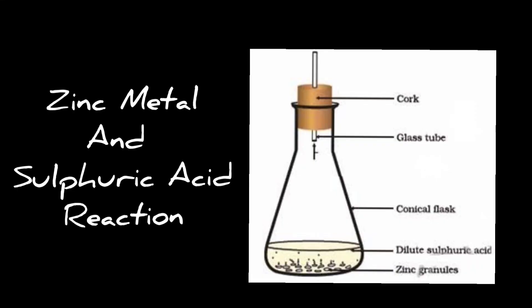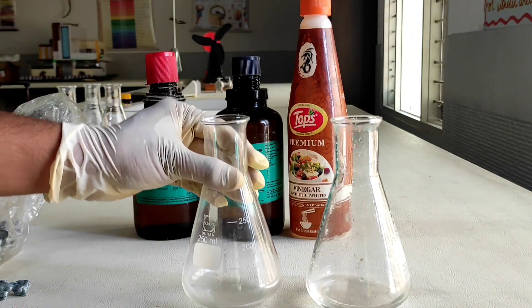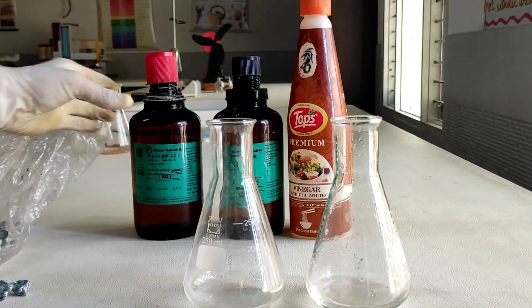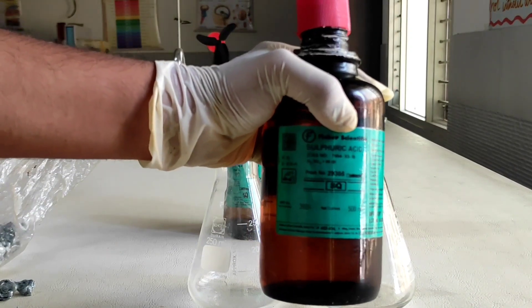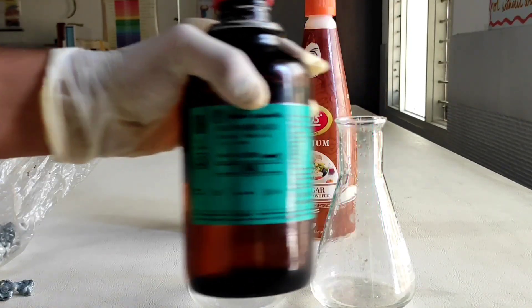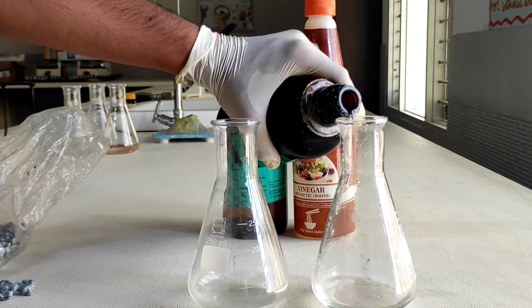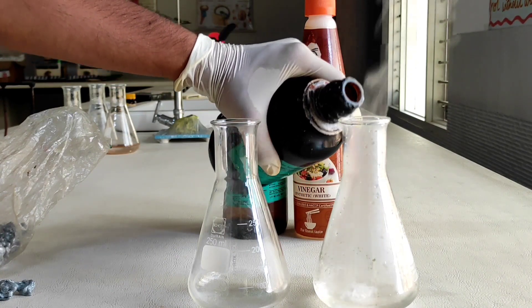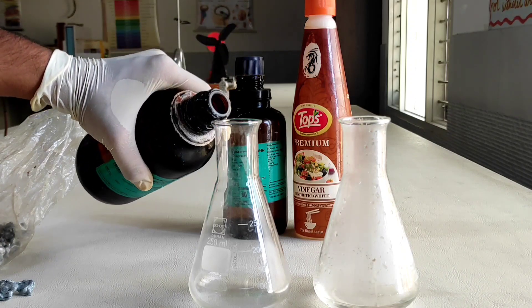Now it's time to check the reaction between zinc metal and sulfuric acid. The first conical flask has some amount of water and the second conical flask is dry. Sulfuric acid is also known as the king of acids. It has the chemical formula H₂SO₄. Slowly pour sulfuric acid into both conical flasks, as mixing water and acid is an exothermic reaction.